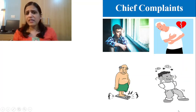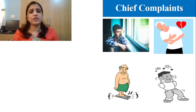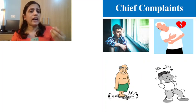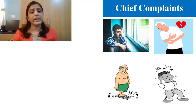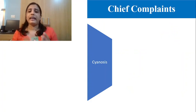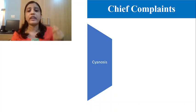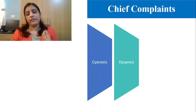Syncope indicates that blood supply is not adequate to reach the brain. Some patients report syncope, vertigo, or dizziness due to cardiac diseases. The usual complaints with which a patient comes to a cardiac emergency unit include chest pain, breathing difficulty, tiredness, vertigo, excessive weight gain or weight loss, and cyanosis. Cyanosis — bluish discoloration — is seen especially in congenital heart diseases. For example, in tetralogy of Fallot, when the child cries, the child turns blue.